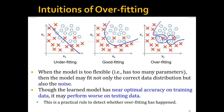Basically, if the model achieves near optimal accuracy on the training data, but when you look at the accuracy on the test data it's very, very bad, then we say that it has started to overfit.